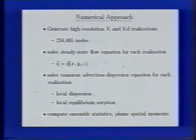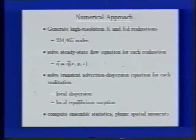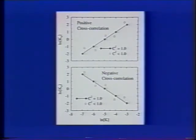We'll use a numerical approach where we generate in three dimensions high-resolution hydraulic conductivity and KD fields, solve the steady-state flow equation, and solve the advection-dispersion equation for solute transport. Because we represent all the heterogeneities explicitly, we use very small local-scale dispersion parameters and assume only local equilibrium sorption within each individual bed. We do this over and over in a Monte Carlo framework and compute ensemble statistics concerning plume behavior. We investigated both negative and positive cross-correlations between KD and K, with either perfect cross-correlation—where data points fall exactly on a straight line—versus cases where coherency C² is less than 1, introducing scatter in the relationship.